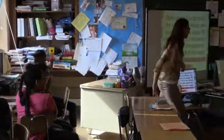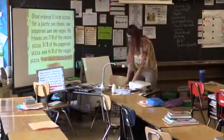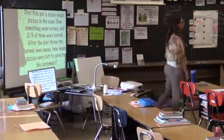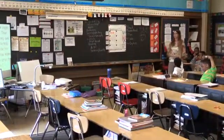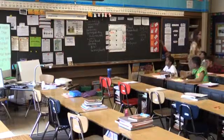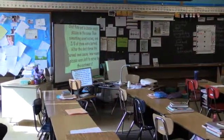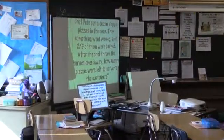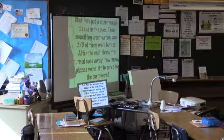All right, so let's go on to another one. Let's try number two. Davion, please read that. Chef Pee put a dozen veggie pizzas in the oven. Then something went wrong, and two-thirds of them were burned. After Chef Pee threw the burned ones away, how many pizzas were left to serve?